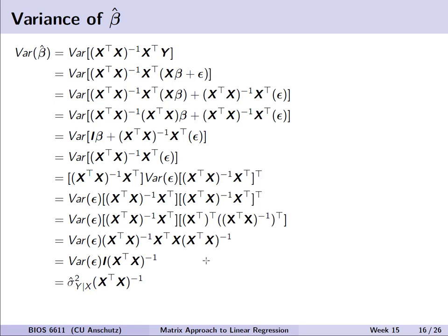One final note is a brief derivation of the variance of beta-hat in matrix notation, showing through various steps that MSE times (X-transpose X) inverse is the appropriate estimate for variance in this matrix approach.